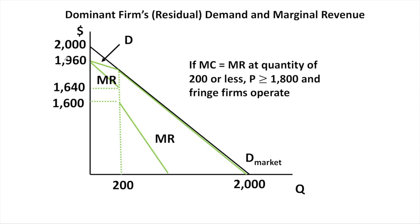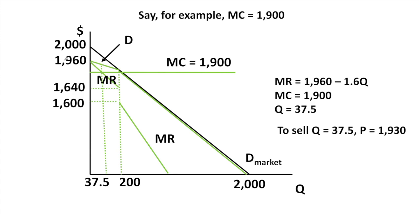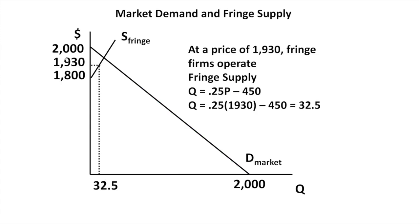Now let's look at what happens if the dominant firm's costs are higher. If MC equals MR at a quantity of 200 or less, that gives a price greater than 1,800, and in this case the fringe firms operate. For example, if the dominant firm has a constant marginal cost of 1,900, it maximizes profits where MR equals MC, giving a quantity of 37.5 units. To sell 37.5 units, it charges a price of 1,930. At that price, the fringe firms want to operate and will supply a quantity of 32.5 units.